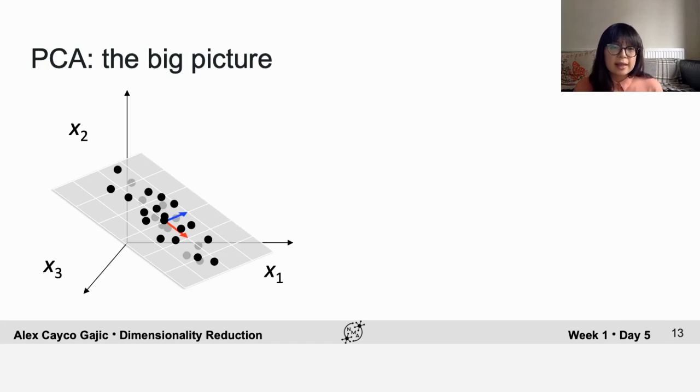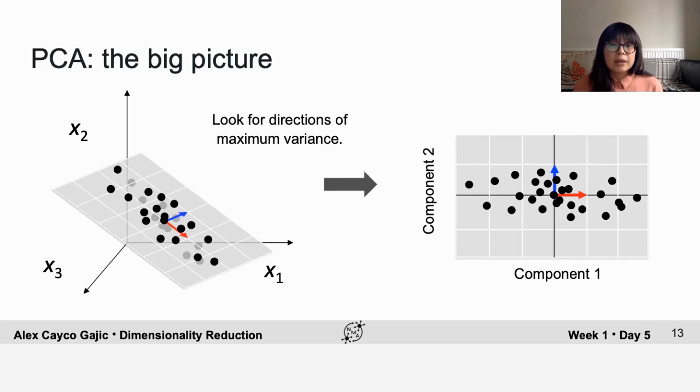Usually we see that they are constrained to lie on a lower dimensional subspace. And the goal of PCA is to find this low dimensional subspace by looking for directions of maximum variance in the data.